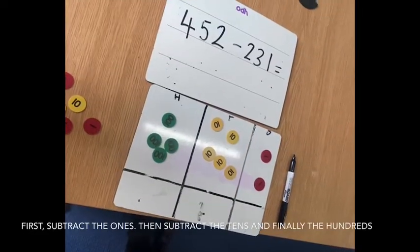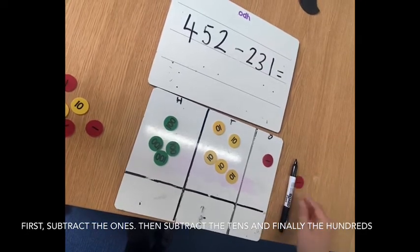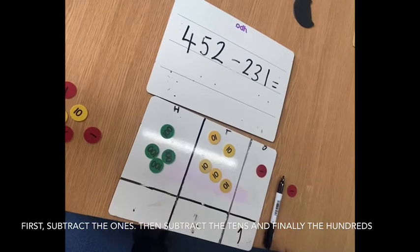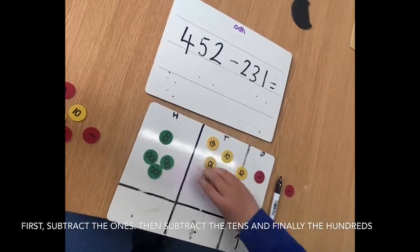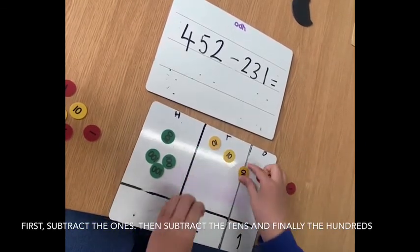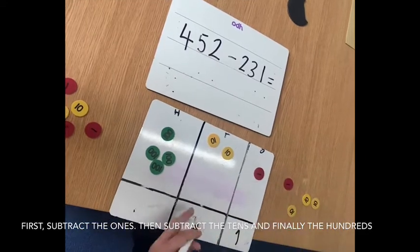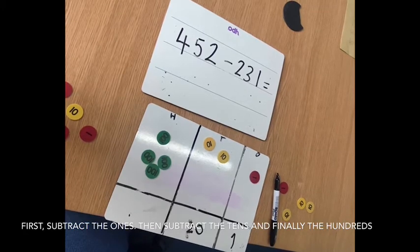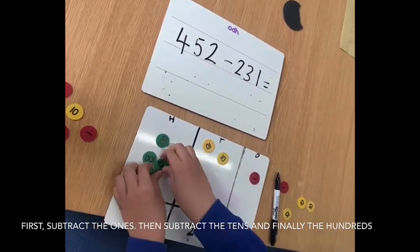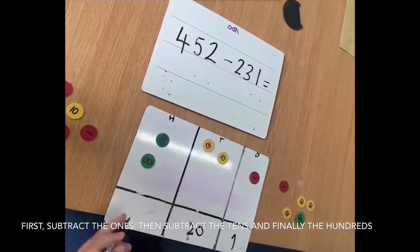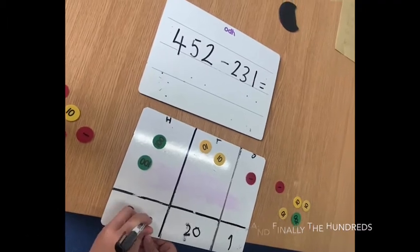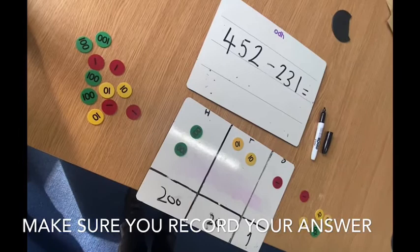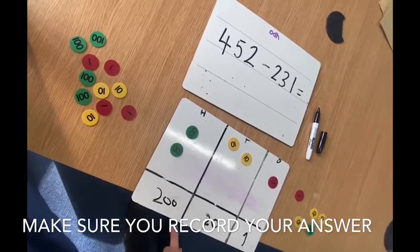Let's start with the ones. 2 take away 1 is 1. 50 take away 30 is 20. And 400 take away 200 equals 200. Now we need to put it together and it makes 221.